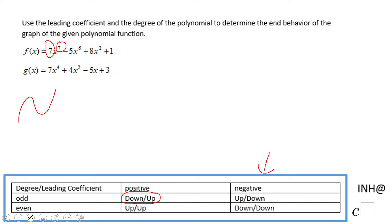What about g(x)? Let's take a look at g(x). The degree is even, right - it's four - and the leading coefficient is positive, so it's going to be up/up, something like that: left up, right up.